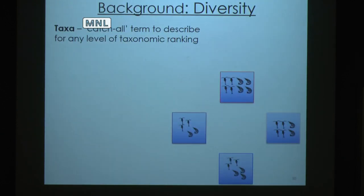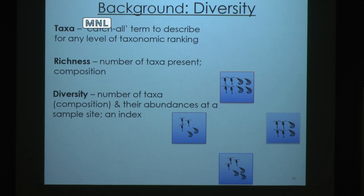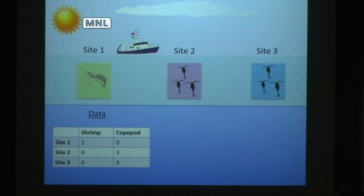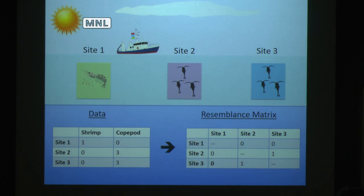A little bit of background: taxa is a catch-all term to describe any taxonomic level of animals. Based on our methods, we had some animals identified down to genus and others were just a functional group. Two underpinning principles of ecology are richness — the number of taxa present — and diversity, which looks at not only composition but also abundance at a sample site, typically expressed as an index. For my study I used beta diversity, which looks at the variation in both the composition and abundance of taxa among sample sites within a sampling unit. In a resemblance matrix, site three compared to site two may be identical with a value of one, whereas site one compared to site three has nothing in common and scores zero; most sites fall somewhere in between.